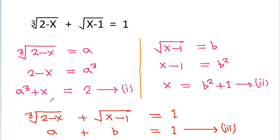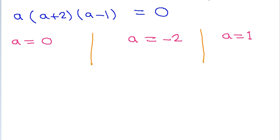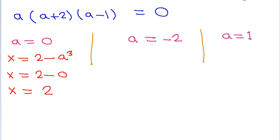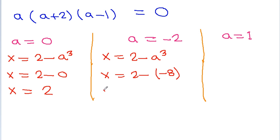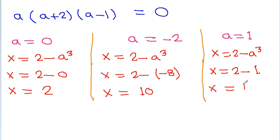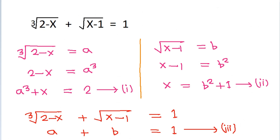From equation 1, x is equal to 2 minus a cube. When a equals 0, x equals 2 minus 0, so x equals 2. When a equals minus 2, x equals 2 minus (minus 8), so x equals 10. When a equals 1, x equals 2 minus 1, so x equals 1. We get x equals 2, 10, and 1.